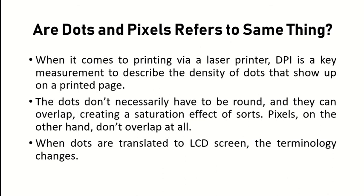Dots and pixels may seem the same when it comes to printing. For a laser printer, DPI describes the density of dots that show up on a printed page. Dots are not necessarily round; they can be in any shape or splash and can overlap with other dots. The overlapping of dots and their color gives a sharp effect, meaning saturation increases as pixels overlap. When dots are translated to an LCD screen, our terminology changes from dots per inch to pixels.